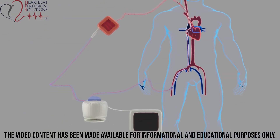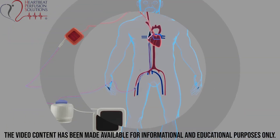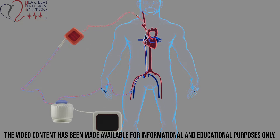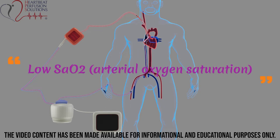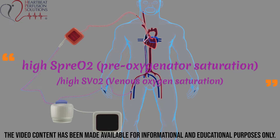This anomaly leads to a reduction of efficient gas exchange, or VQ mismatch. The classic signs of recirculation are low SaO2 (arterial oxygen saturation), high SpriO2 (pre-oxygenator saturation), and high SvO2 (venous oxygen saturation).